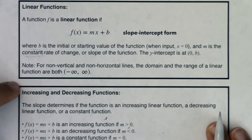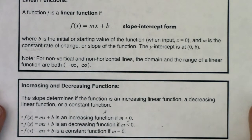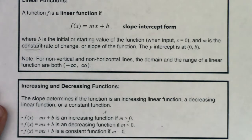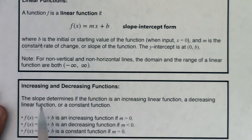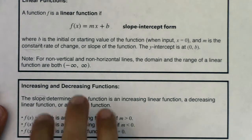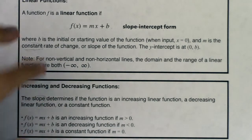So moving on to increasing and decreasing functions. And again, we've talked about this concept a little bit as well. We've talked about intervals of increasing and decreasing in Chapter 3. But for lines specifically, there's a nice tell as to whether your line is increasing, decreasing, or neither, and it all is based around the slope. So the slope determines if the linear function is an increasing linear function, a decreasing linear function, or a constant function. And this is only true for the slope in linear functions.